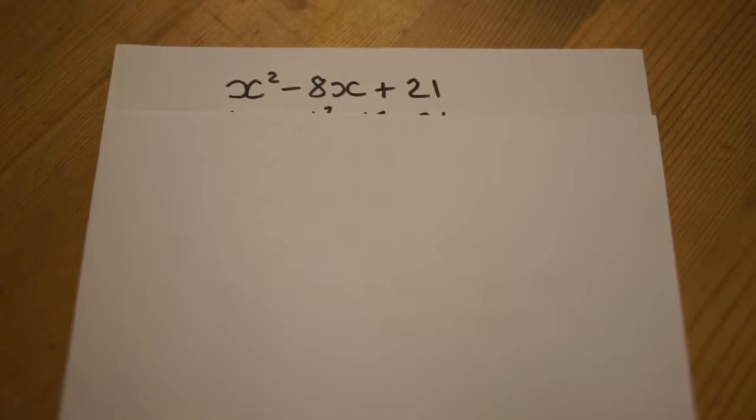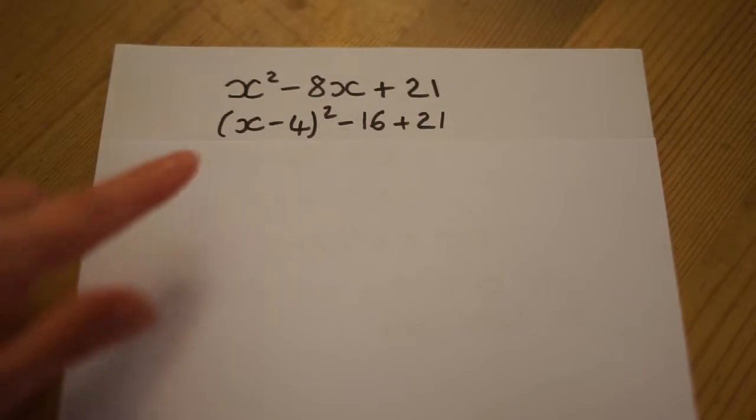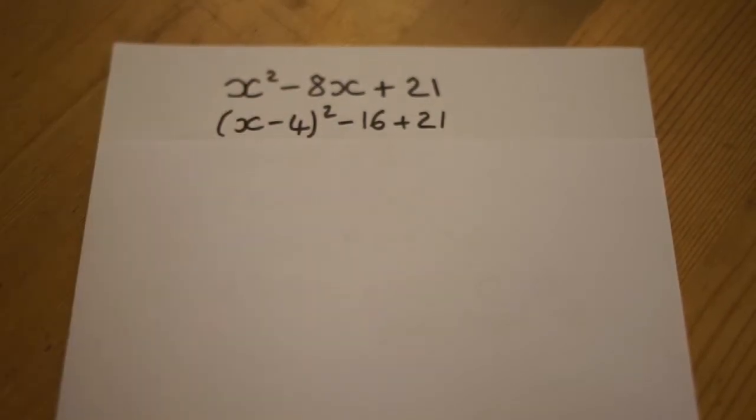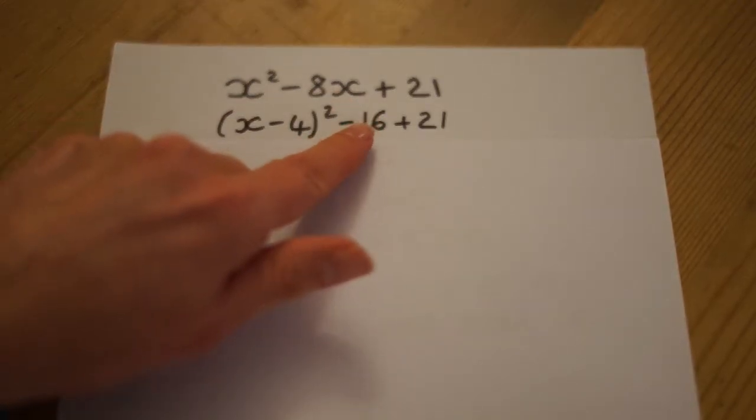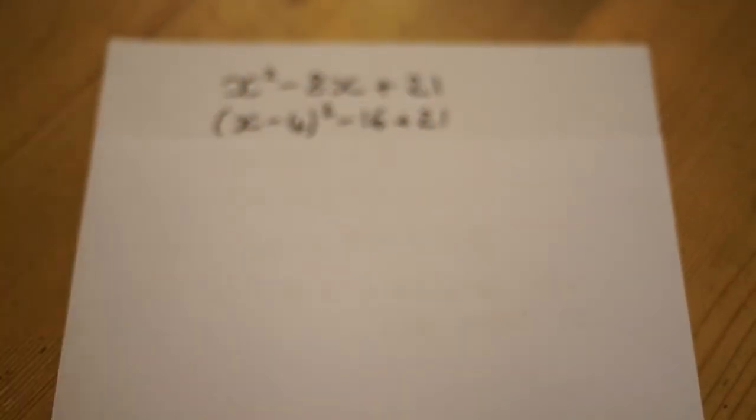So open the bracket, take away half of this coefficient, square it. We know that negative 4 times negative 4 is 16, so we take away the 16 and then we've got the 21 again.